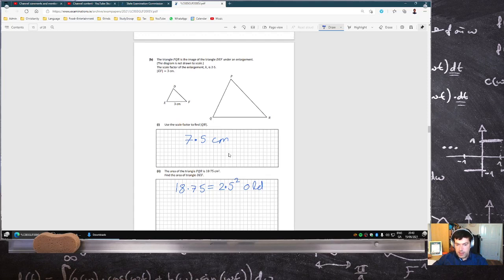Which is what they want here. So that means it was 3 centimeters squared. And let's check: 3 times 2.5 squared is 18.75.